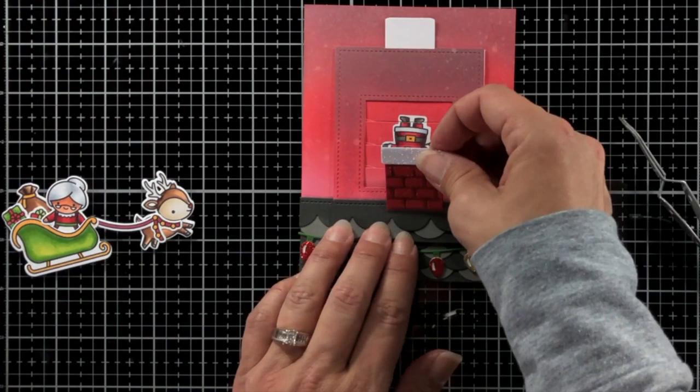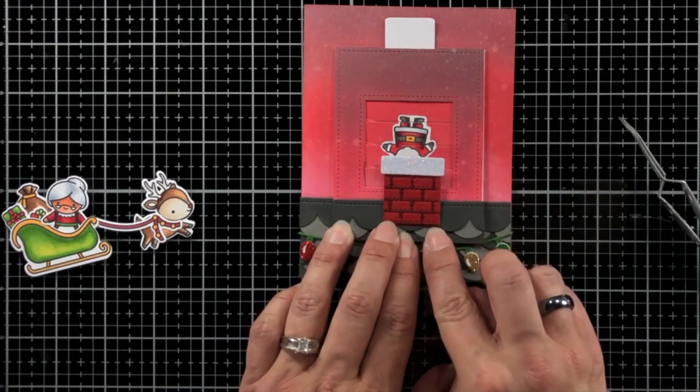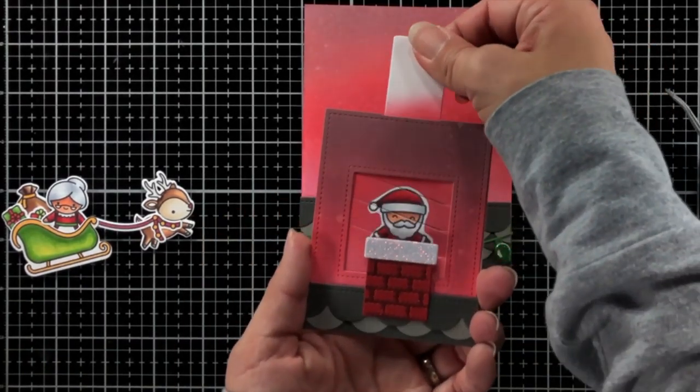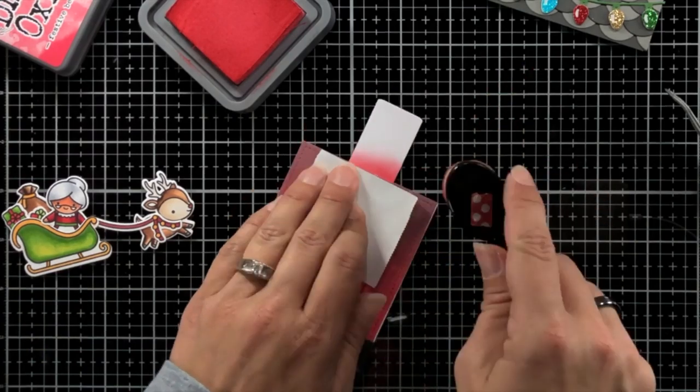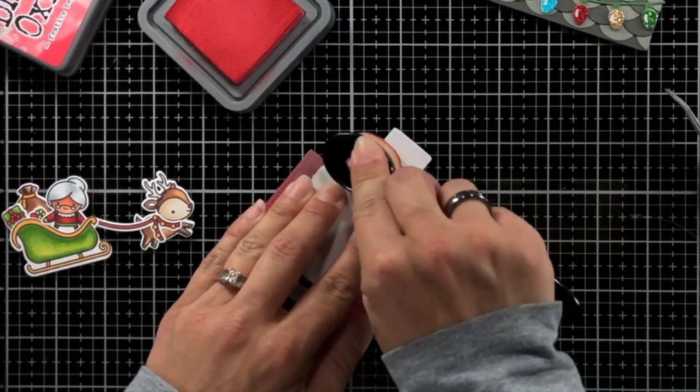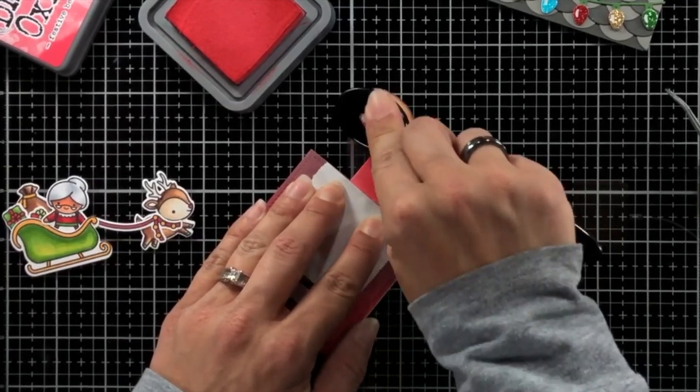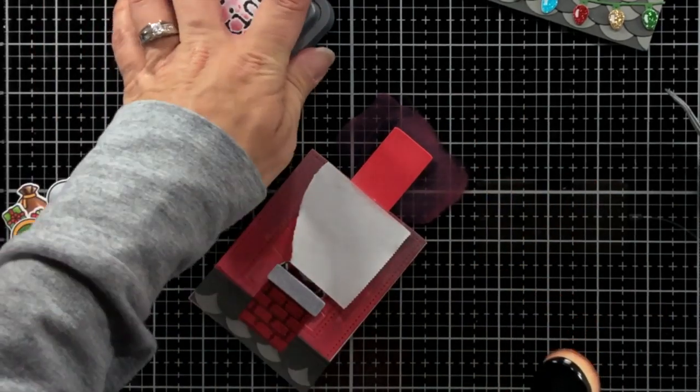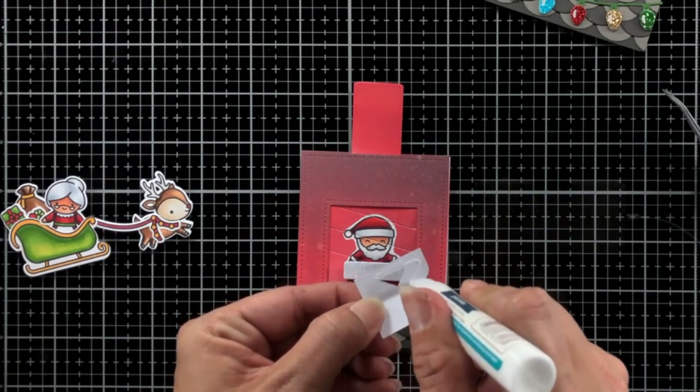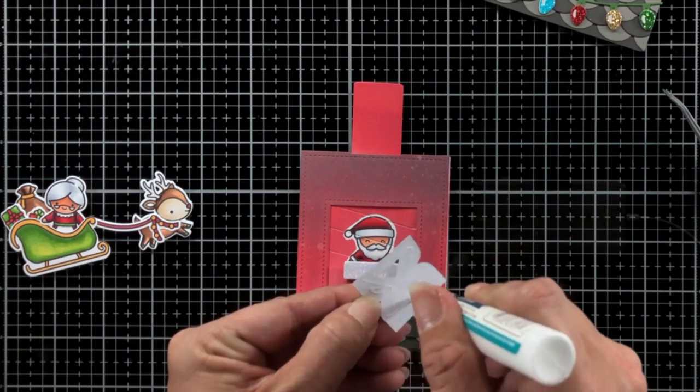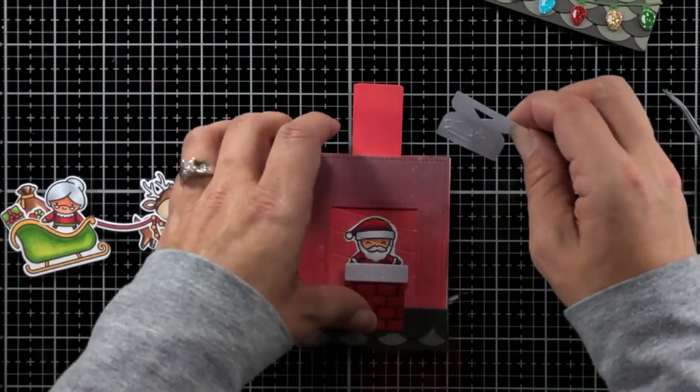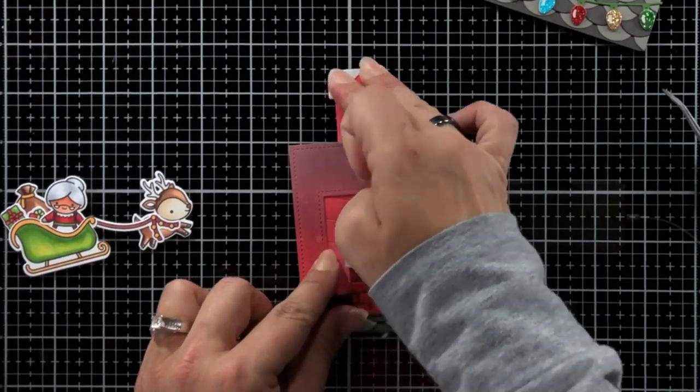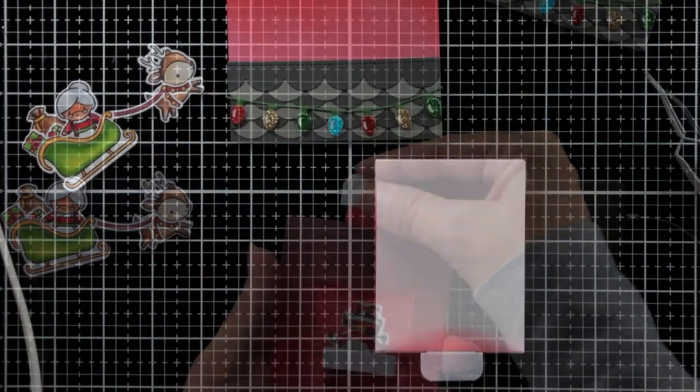I had already went ahead and glued my sleigh and my Mrs. Claus in there with the reindeer to kind of save some time. I did already go ahead and put adhesive just at the bottom of my chimney and glued that down. Now I'm just adding a little bit of my festive berries to that pull tab that's going to pull out. And I have the indicator here, die cut from Pixie Dust cardstock. I wanted a little bit more glitter on here. So I love the Pixie Dust cardstock. It's definitely one of my favorite cardstocks and it works so great for snow.